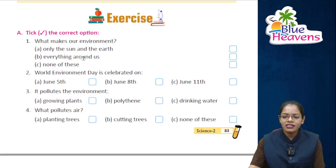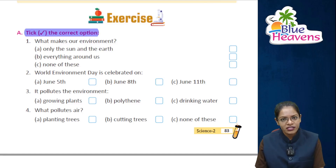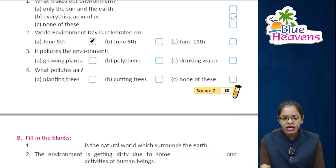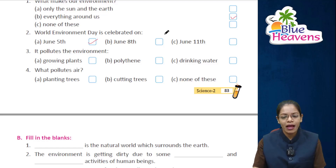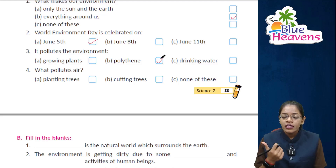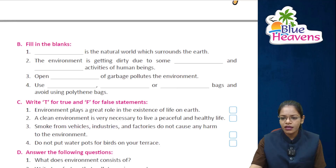Now it's exercise time. Exercise A — write the correct option. First: what makes our environment? The answer is B — everything around us. Second: World Environment Day is celebrated on 5th June — answer is A. Third: what pollutes the environment? Answer is B — polythene bags. Fourth: what pollutes air? Answer is C — none of these, because air is polluted by smoke from factories, vehicles, and chimneys.